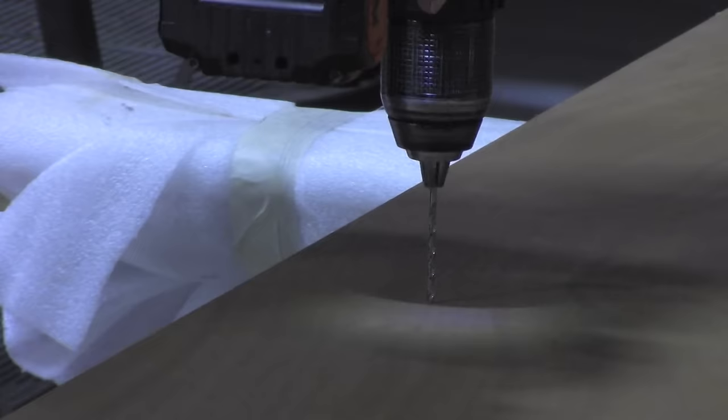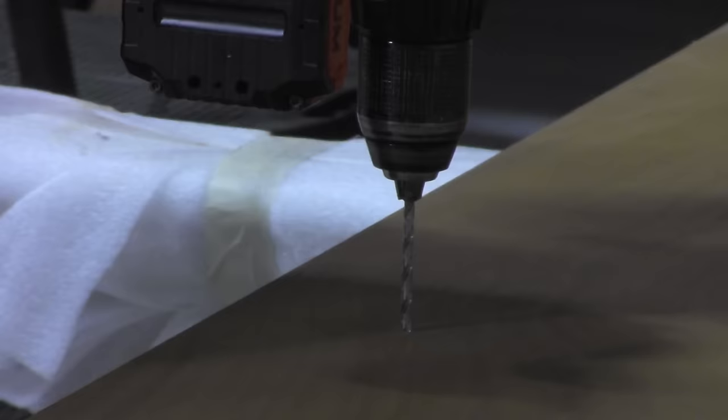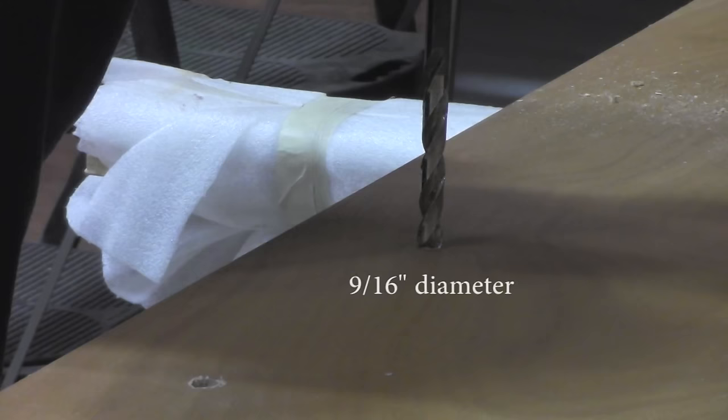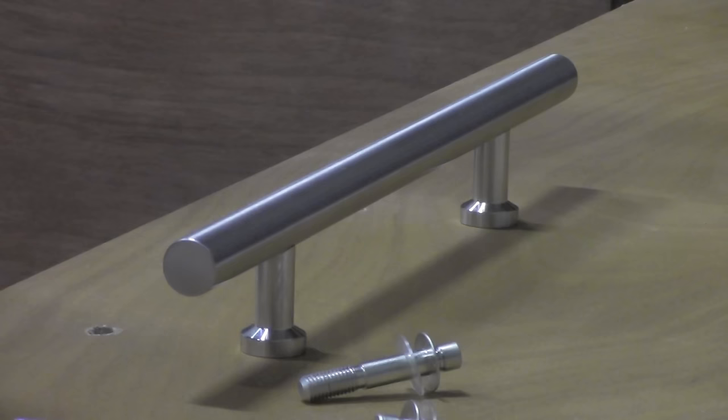Mark or punch your hole positions for drilling. The hole cut is 9/16 of an inch in diameter, but depending on your door type, you may want to slowly widen the opening through a series of smaller cuts before using the 9/16 drill bit.